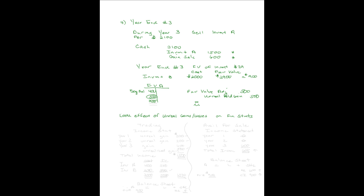Moving on to our second objective: the effect of unrealized gains and losses on the financial statements. Now I must decide — was it a trading investment or available for sale? Let's first do trading. In trading investments, unrealized gains go to the income statement. For year one we picked up $200, for year two another $200. In year three, we had a realized gain of $600 from the sale plus an unrealized gain of $500.